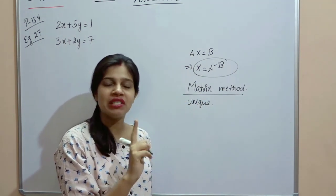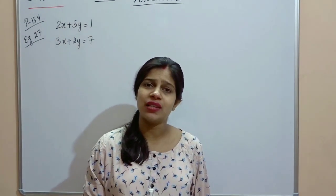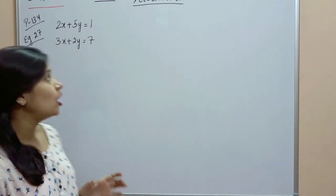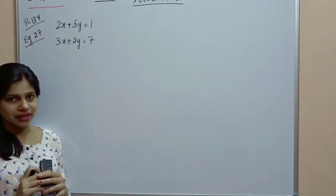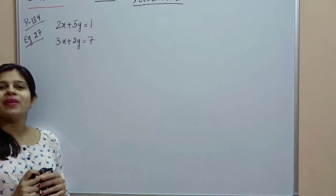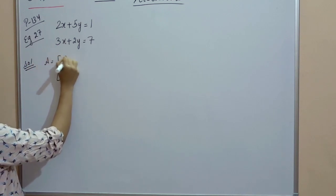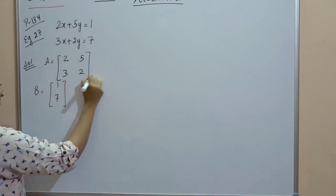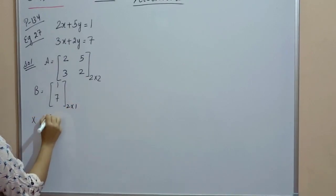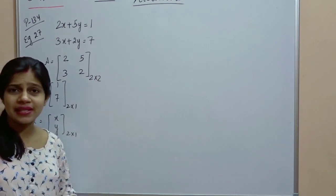Case 1 — what do we call it? Matrix method. So if you have mentioned in question or not, don't confuse it. Solve the system of linear equations using matrix method — this method means Case 1. Case 1 means A can be non-singular matrix. So A will be: 2, 3, 5, 2. B will be: 1, 7. This is 2x2 matrix. This is 2x1. X is xy, also 2x1. We call it matrix method because we have AX = B in the form of matrix.